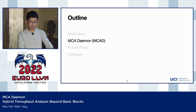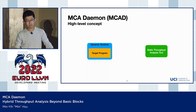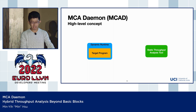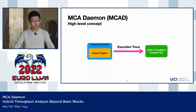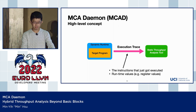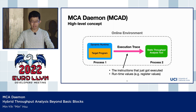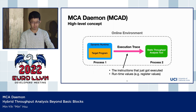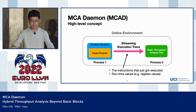Now let's talk about the design and implementation of MCADmon, or MCAT. The key idea is combining the strengths from both dynamic and static analysis. The program under analysis on the left-hand side is executed inside a dynamic runtime, which collects execution traces and sends them to the static throughput analysis on the right. The execution traces include the instructions just executed and some runtime values like register values. What's unique about this framework is that both parties are happening online — the throughput analysis tool is performing analysis on the fly, in parallel with execution of the target program. The execution trace streams from the dynamic side to the static throughput analysis tool.